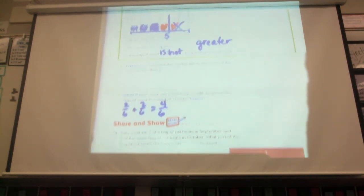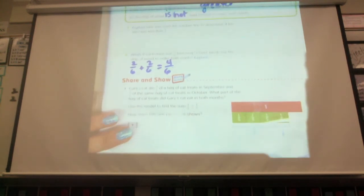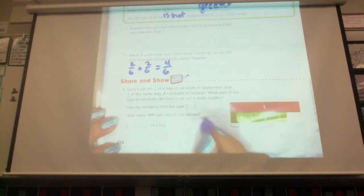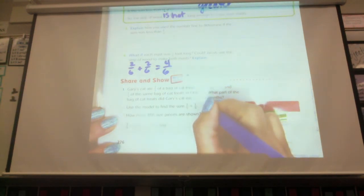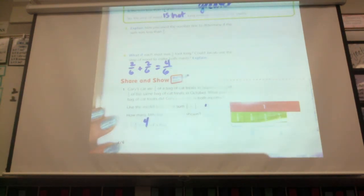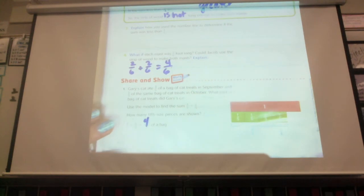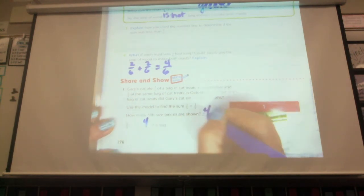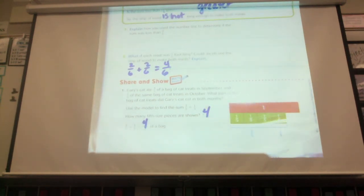All right, Gary's cat ate three-fifths of a bag of cat treats in September and one-fifth of the same bag of cat treats in October. What part of the bag of treats did Gary's cat eat in both months? We're just going to add those. Three-fifths the first month, one-fifth the second month. How much does that equal, class? Four-sixths. Four-sixths. Not six. Four-fifths. Here's the model. We see that he had one, two, three, four of the pieces. Four pieces. Obviously, it's not pieces. It's parts of a bag.